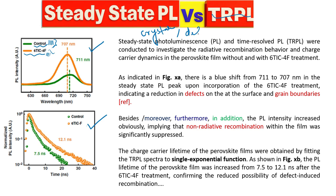We can also say that the defects decrease. Or we can say that the carrier will move faster. All these things are related with each other, because we want to know the carrier dynamics with the help of photoluminescence. Carrier dynamics means mobility. When there are defects, the mobility will be low; when there are no defects, the mobility will be faster. So when we modify the film, crystallinity improves, carrier dynamics improves, mobility increases, and defects decrease.